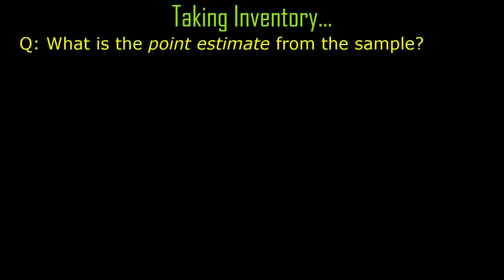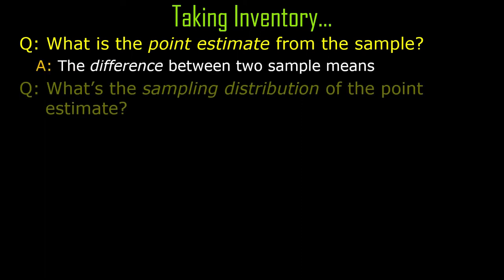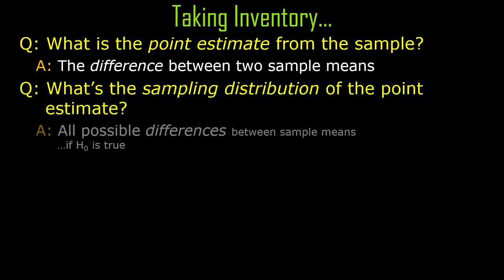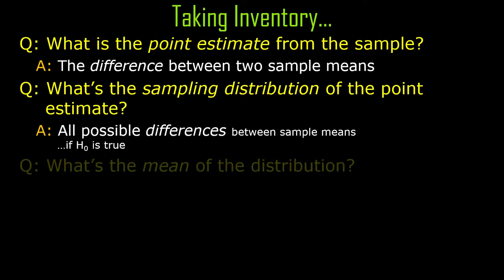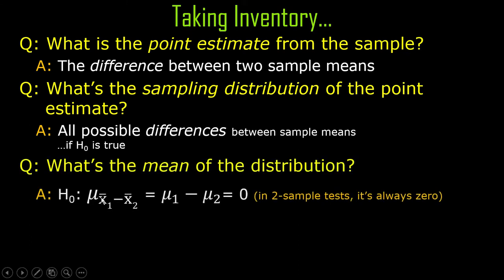For the difference between two independent sample means, the point estimate is the difference between two means. The sampling distribution is the distribution of all possible differences if the null hypothesis is true. The mean of all possible differences if the null hypothesis is true turns out to be mu1 minus mu2, which turns out to be zero. You can just skip to the part that says it's zero.